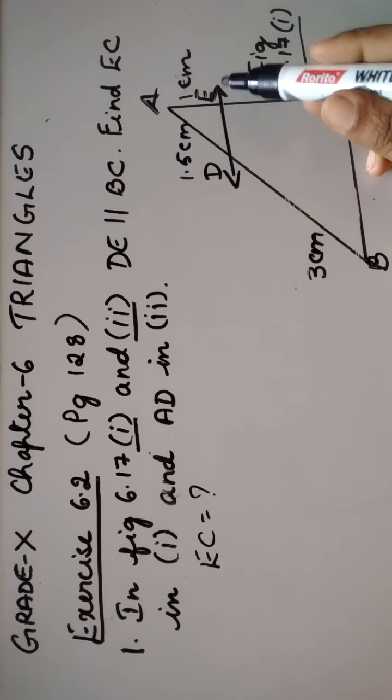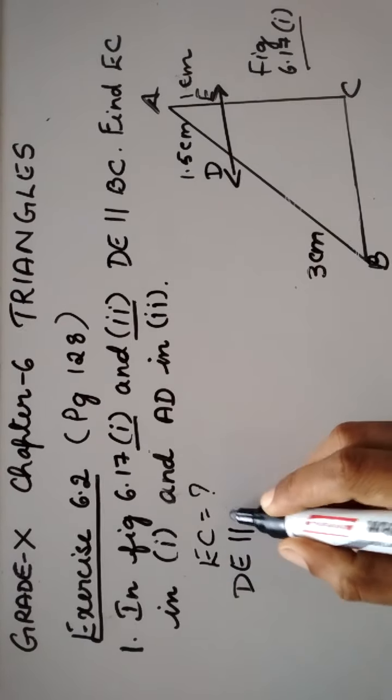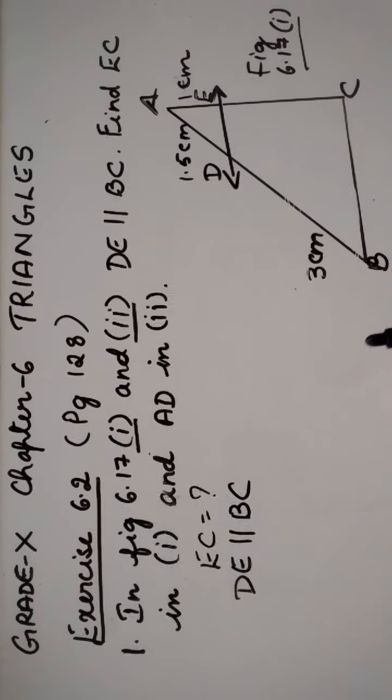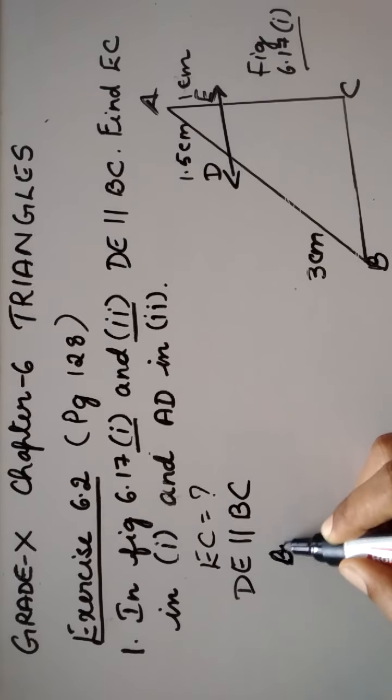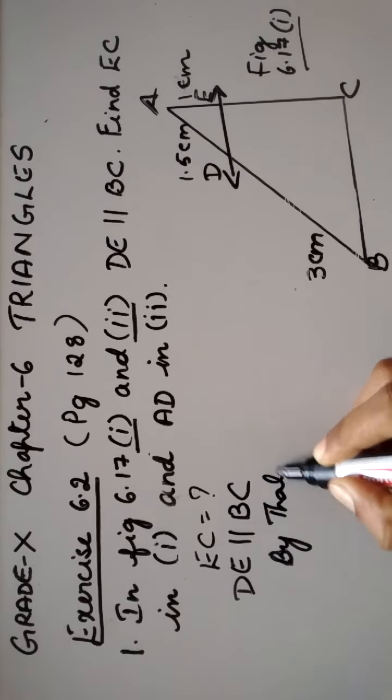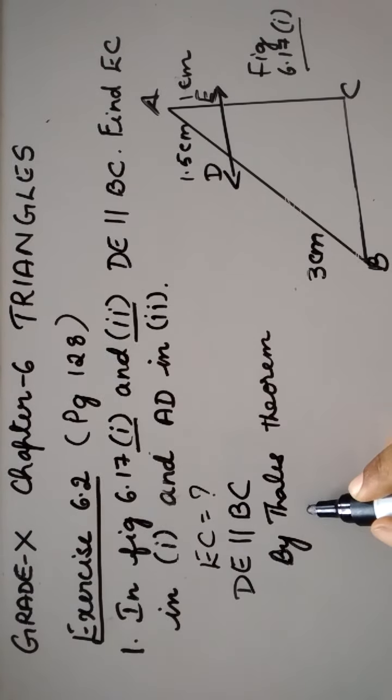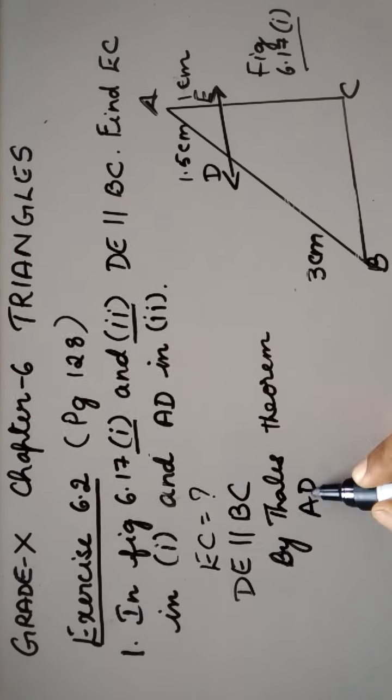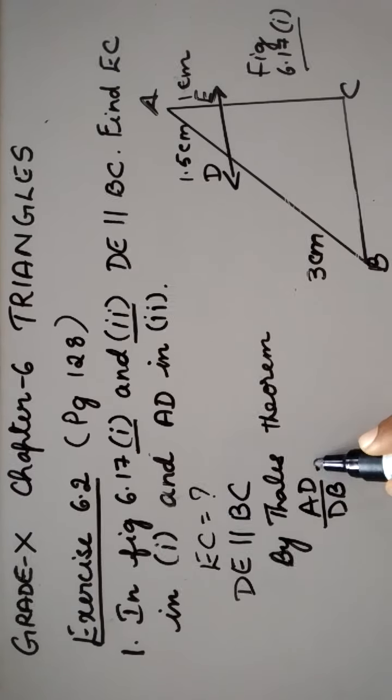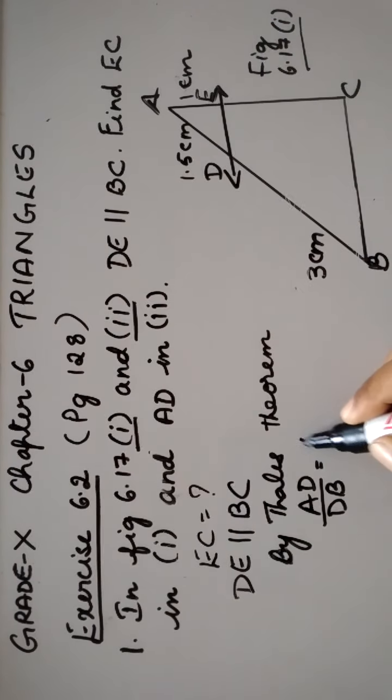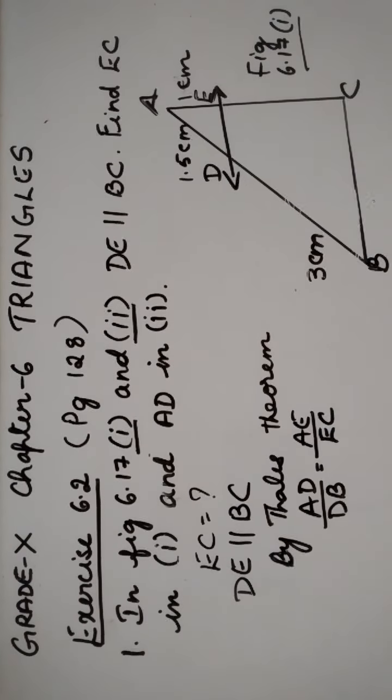Now since DE is parallel to BC, by Thales theorem AD divided by DB is equal to AE divided by EC.